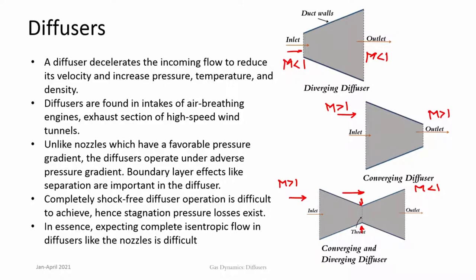A diffuser operates in an adverse pressure gradient because pressure increases across it, which is not good for the boundary layer. In adverse pressure gradients, boundary layers have tendencies to separate. When boundary layer separation happens, other phenomena occur — you get shocks within the ducts. It is actually very difficult to achieve complete shock-free diffuser operation, unlike nozzles. There are other reasons why shocks will be present inside diffusers, making diffusers quite different from nozzles.